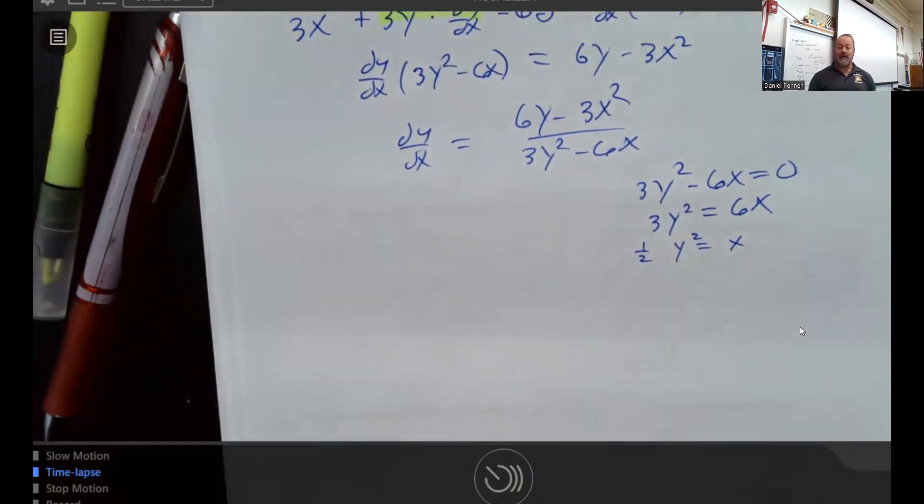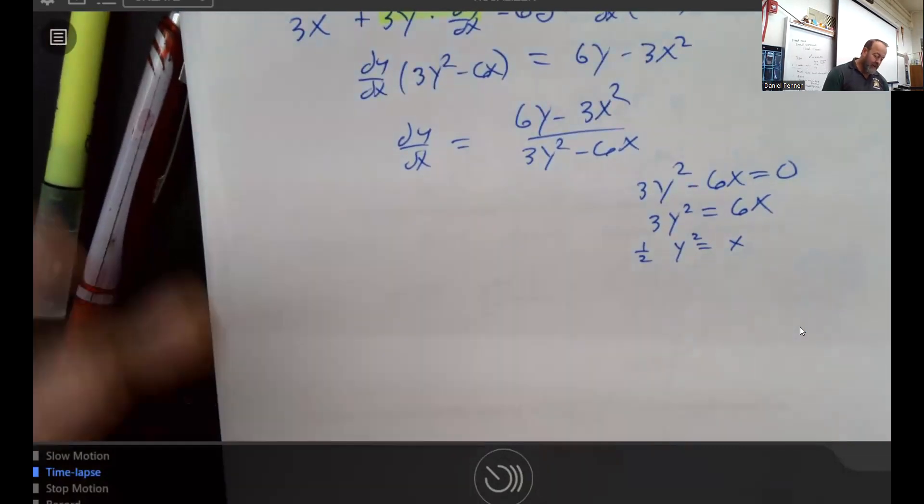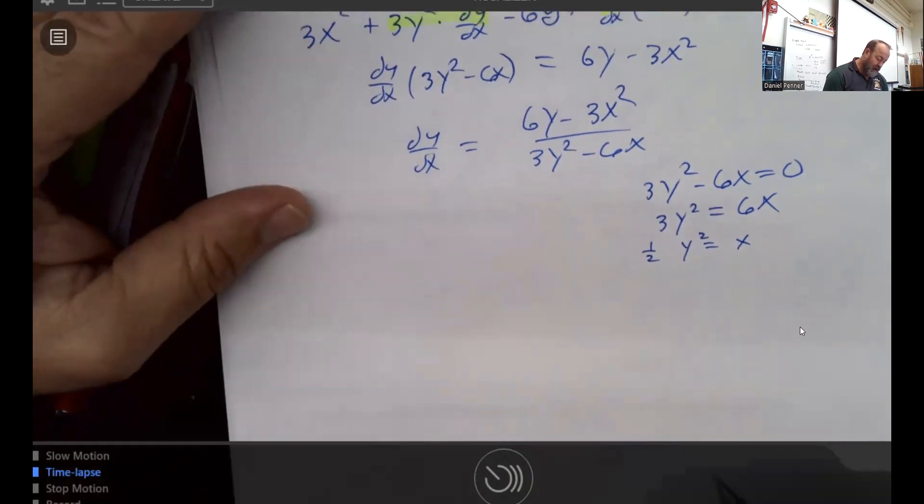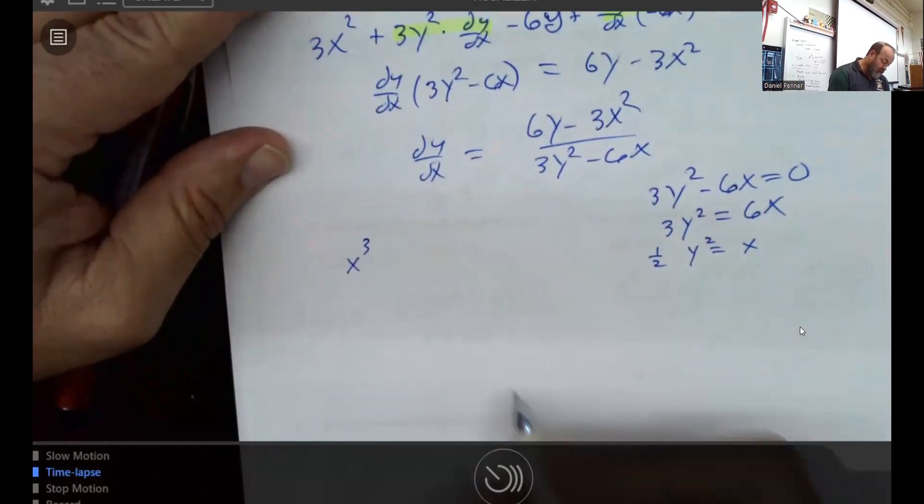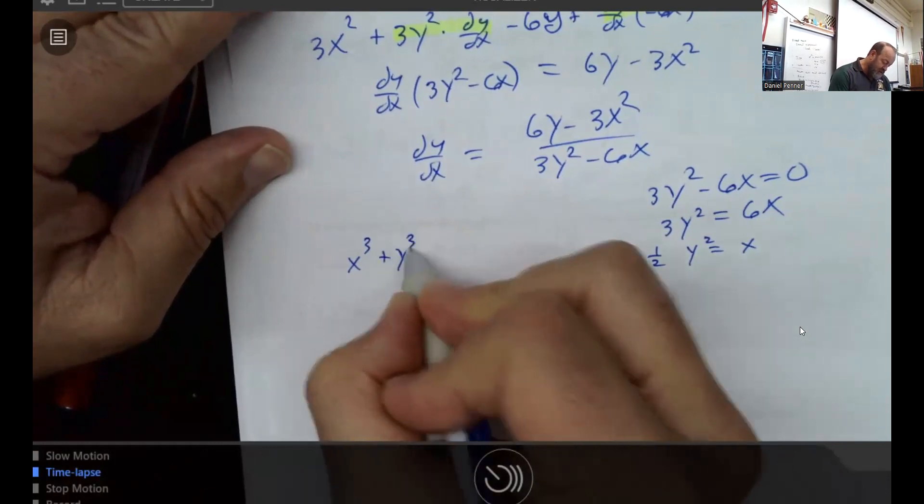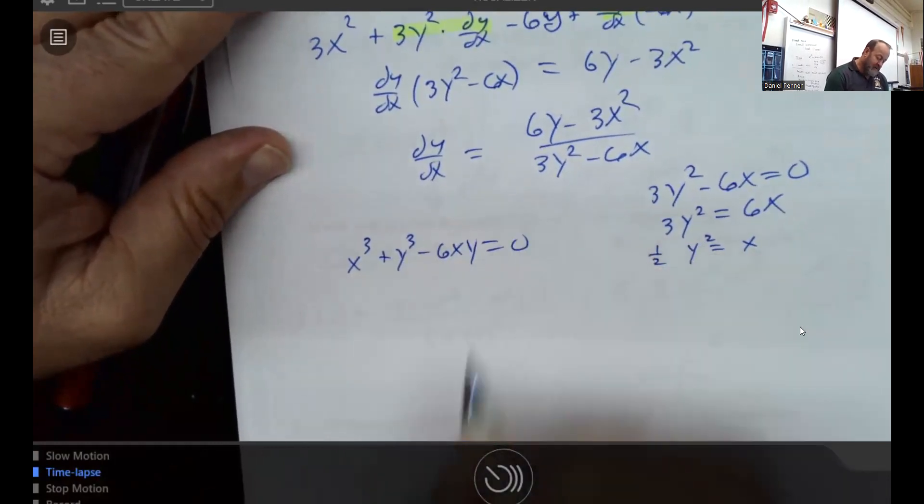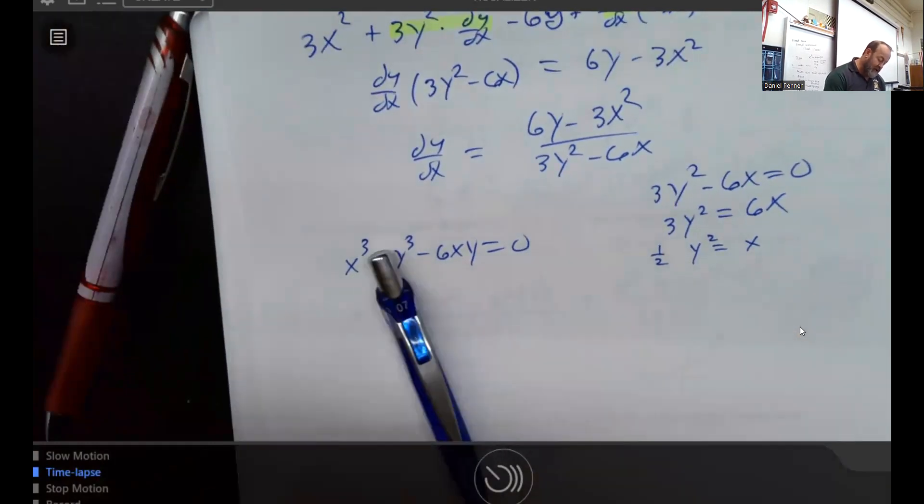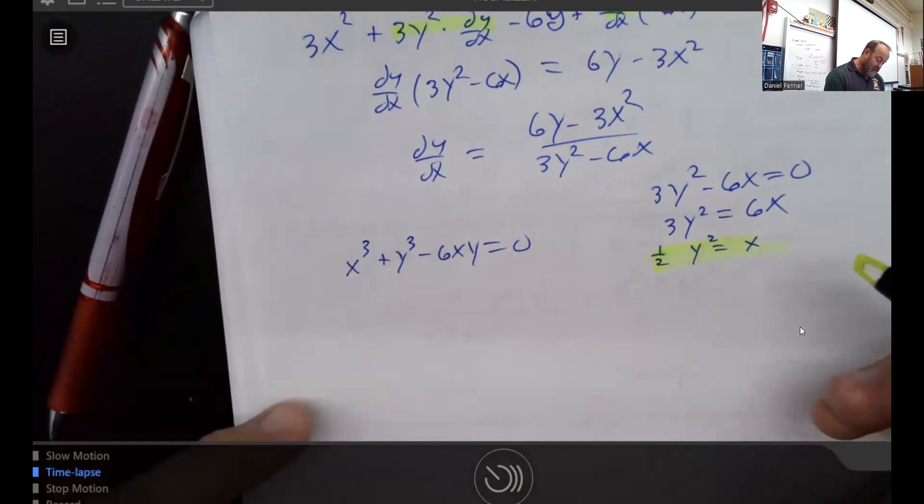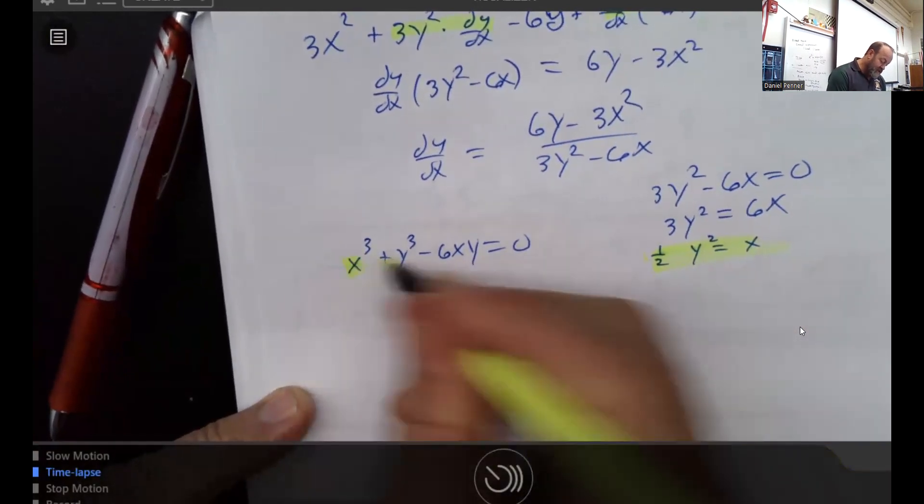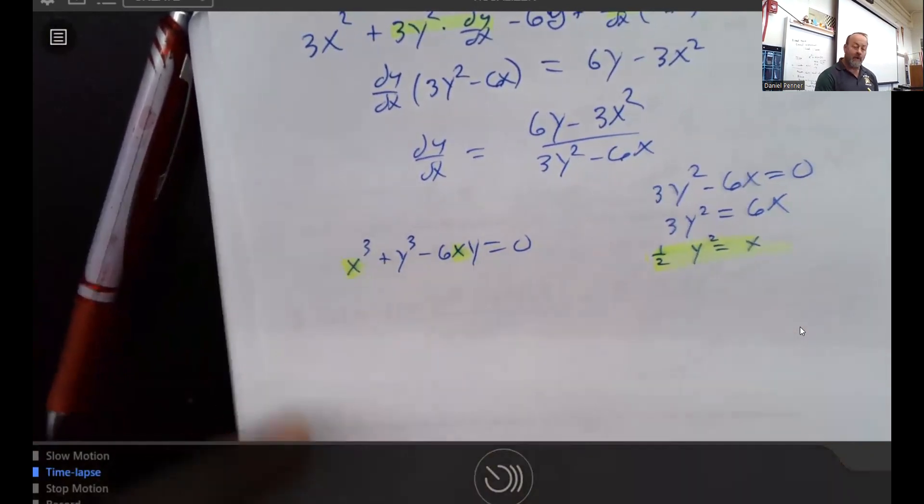Well, that didn't really do everything that I needed. That just gave me a relationship between x and y. But if we revisit the original problem, and keep in mind, the problem said x³ + y³ - 6xy = 0. But since I've established this relationship right here, everywhere I saw an x value, I can replace x with (1/2)y².